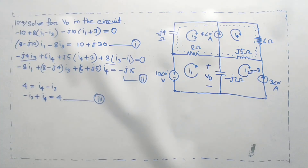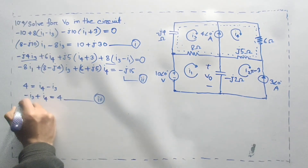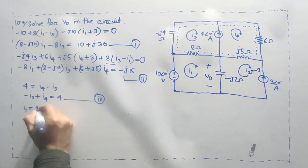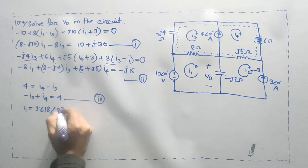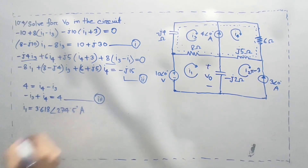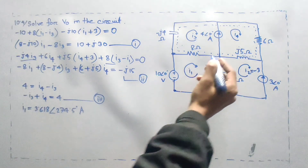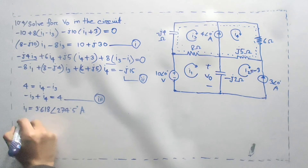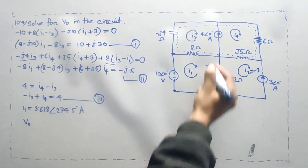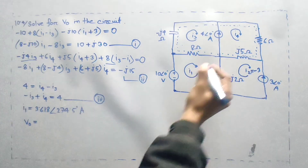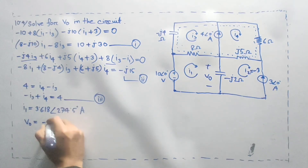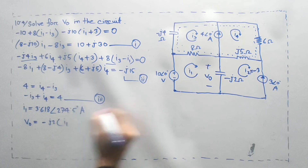We can use MATLAB to check out the calculation data in the video. I will see the MATLAB process. Here we have I1. The value is 3.618 angle 274.5 degrees ampere. I will see the value of 4.430, and 3.618 angle 25. Here the value is 3.718 angle 25, so 3.820 angle 25. This value is 4.720 angle 17 degrees.